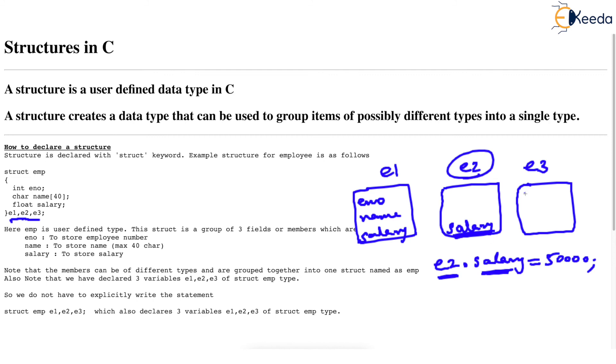Or maybe eno of E3, you want it to be 12. Then you will have to write E3 dot eno should be 12.